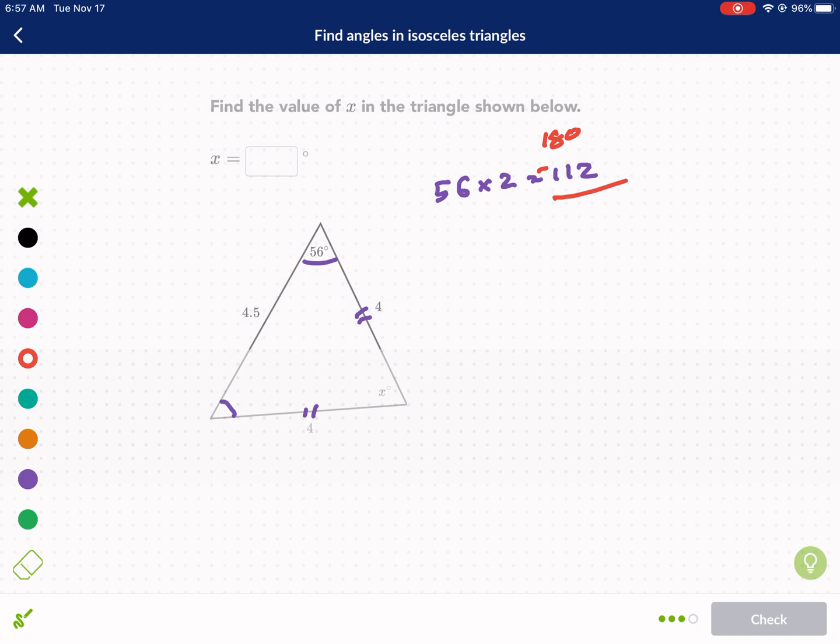So I do 180 minus 112. And that gives me 68. So I get 68 degrees, and that's going to equal x. Let's just double check it showing my formula. So we have, I'll use green, 56 plus 56 plus my vertex angle equals 180. And like I said, this is 112 plus x equals 180. See how I'm just using the same process I just described, minus 112, and we get 68. So x equals 68.